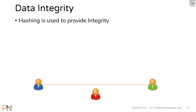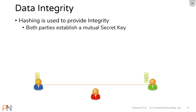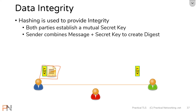That something else looks like this. Before each party can provide integrity on what they send to each other, they must first establish a mutual secret key. This key is really just a string of ones and zeros — sort of like a password. How they establish this mutual secret key in a secure way is a problem for another lesson. For now, just assume that they were able to establish, secretly, the same identical secret key. When the sender is going to send a message to the receiver, the sender is going to combine the key with the message to calculate the digest.